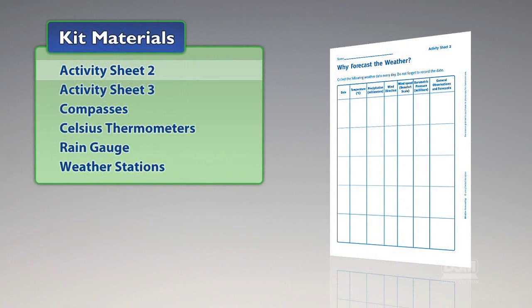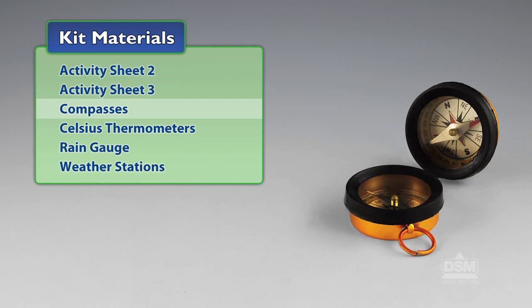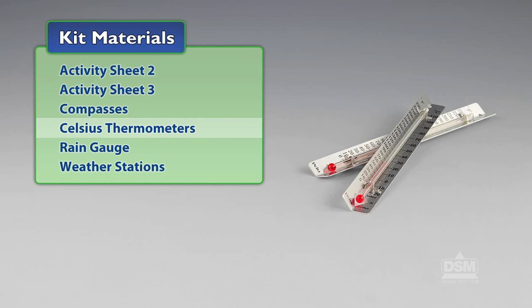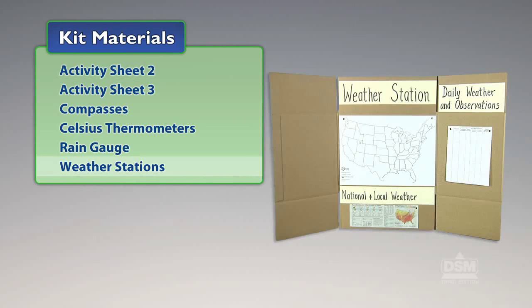You will need the following materials from the kit: Activity Sheet 2, Activity Sheet 3, Compasses, Celsius Thermometers, Rain Gauge, and Weather Stations.